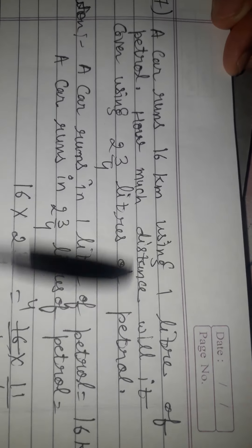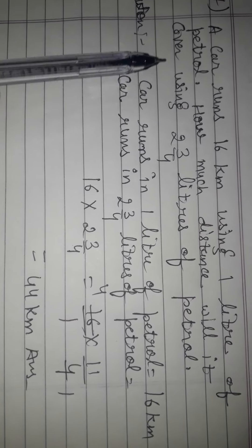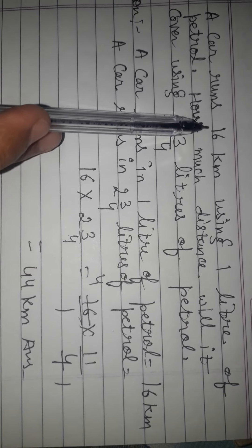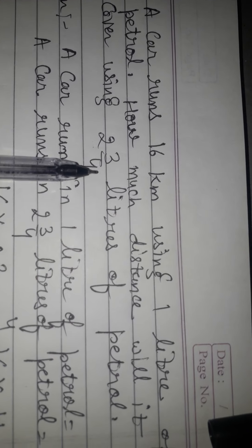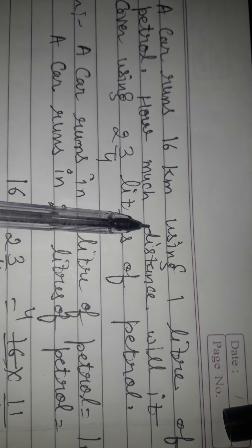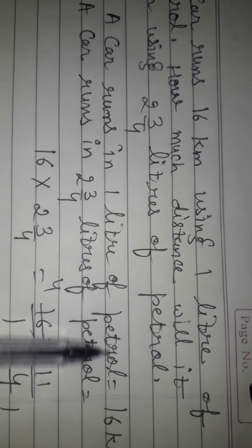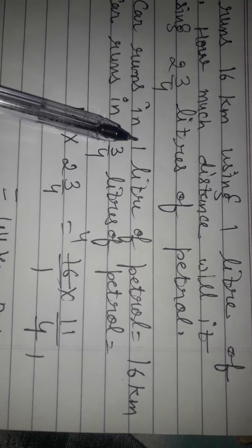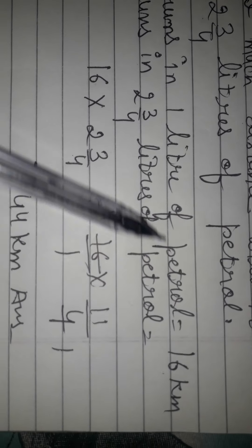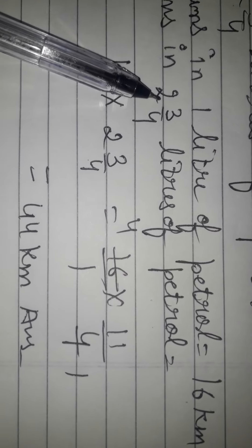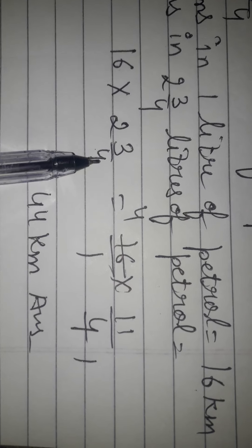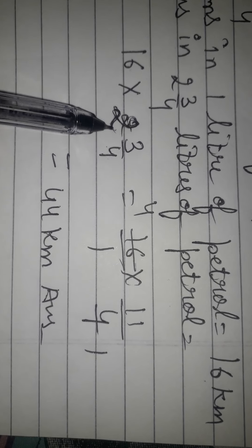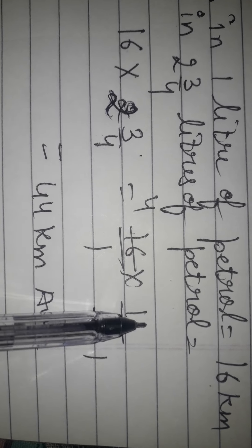Question 7: A car runs 16 kilometers using 1 litre of petrol. How much distance will it cover using 2 and 3/4 litres of petrol? With 1 litre it runs 16 km, so for 2 and 3/4 litres we multiply. Converting the mixed fraction: 4 times 2 plus 3 equals 11, so 2 and 3/4 = 11/4. Now multiply 16 by 11/4.